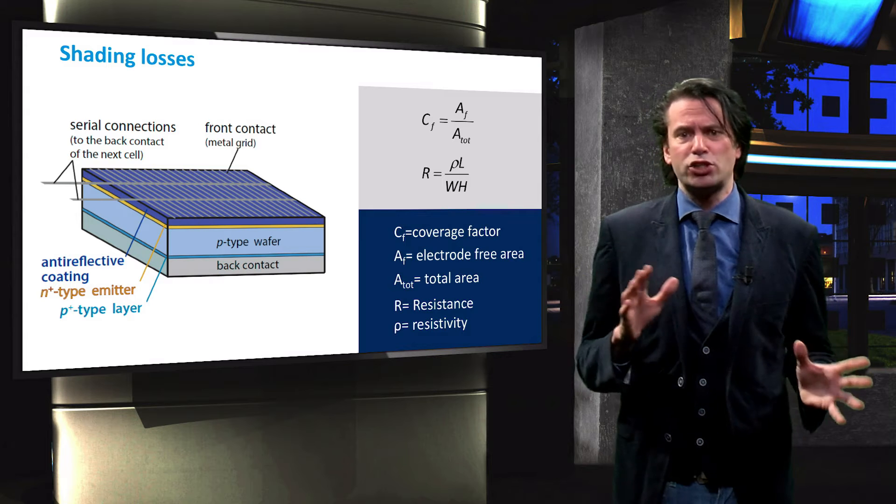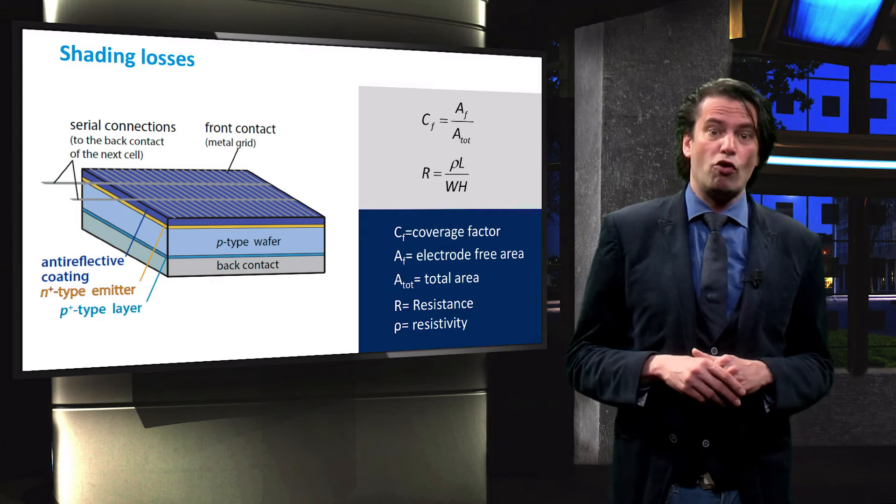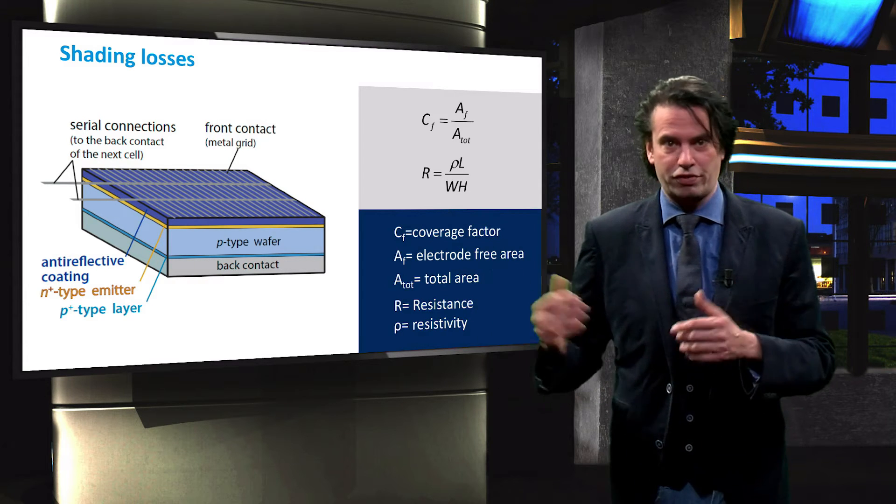Any of these measures will however inadvertently decrease the electrode-free surface area of the metallic grid, and as such decrease the coverage factor.